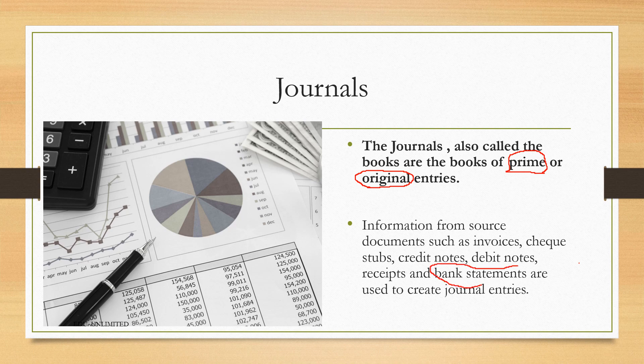For example, a bank statement includes bank charges — information we would not otherwise have known. We take this information, place it into a journal, transfer it into the ledger in the double entry system, extract a trial balance, and then this information — such as a bank charge — is placed in the final accounts on the expenses side of the income statement.